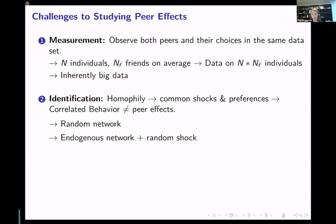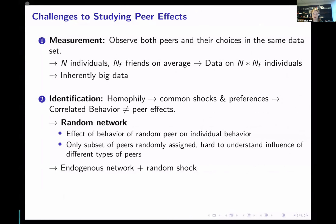The other alternative, if we can't find such a random network, is to take advantage of the existing endogenous network and look at a random shock — tracing something through the network. If I have a random network, I can look at how the behavior of a randomly assigned peer affects the individual's behavior. The issue is that it's hard to find randomly assigned networks, and even when we have them, we often only observe peer effects of these randomly assigned peers who are a subset — so it's hard to understand how different types of peers might affect behavior.